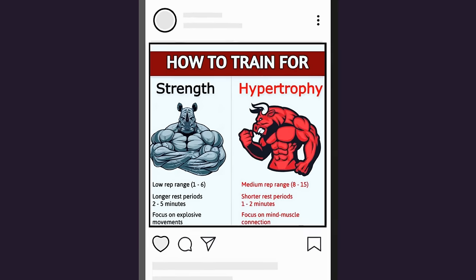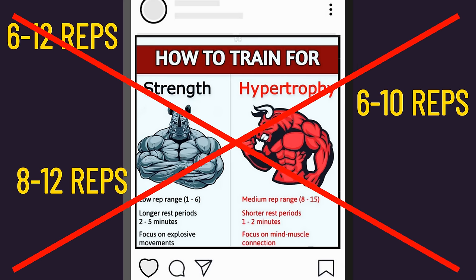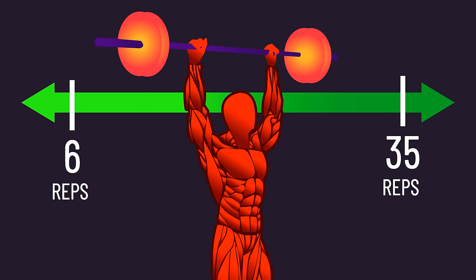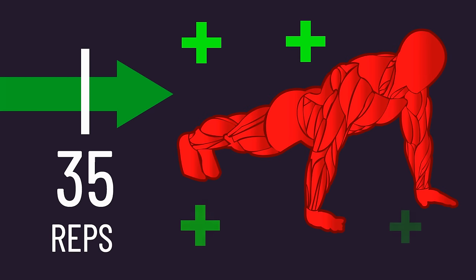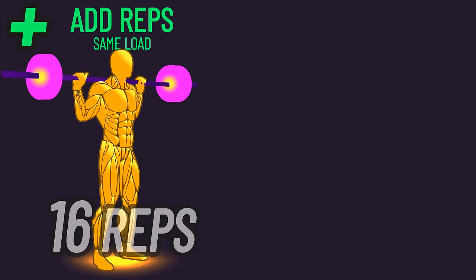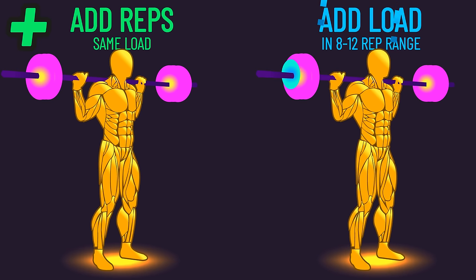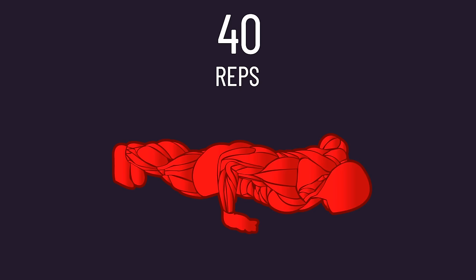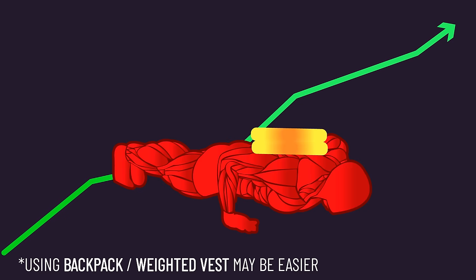Despite the popular belief that 8–15 reps is ideal for hypertrophy, reps between 6–35 are similarly effective for building muscle, provided they're performed close to failure. Thus, progressing to higher rep push-ups is viable. We've had a paper finding that increasing the number of reps with the same load across sessions produced overall similar muscle hypertrophy to a group that increased load within the same rep range. There is only so much you can add reps — going well beyond 35 reps may be inferior — but provided you're not super advanced, weighted push-ups are a great option that enables load increases.